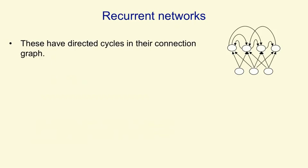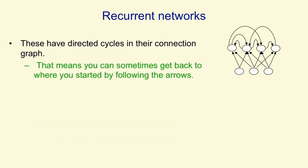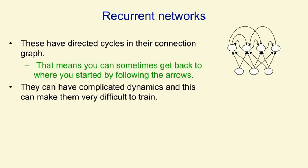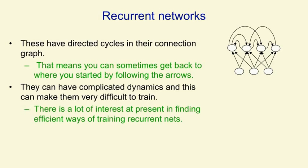Recurrent neural networks are much more powerful than feed-forward neural networks. They have directed cycles in their connection graph. What this means is that if you start at a node, or a neuron, and you follow the arrows, you can sometimes get back to the neuron you started at. They can have very complicated dynamics, and this can make them very difficult to train. There's a lot of interest at present in finding efficient ways of training recurrent nets, because they are so powerful if we can train them.